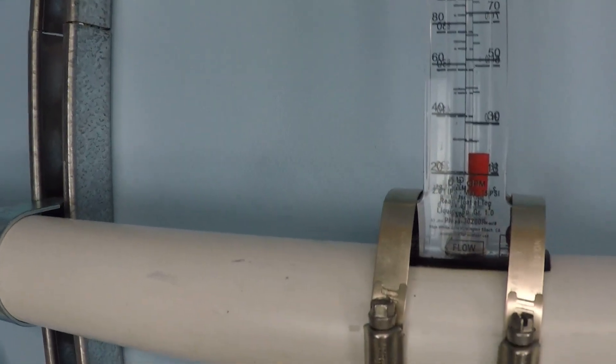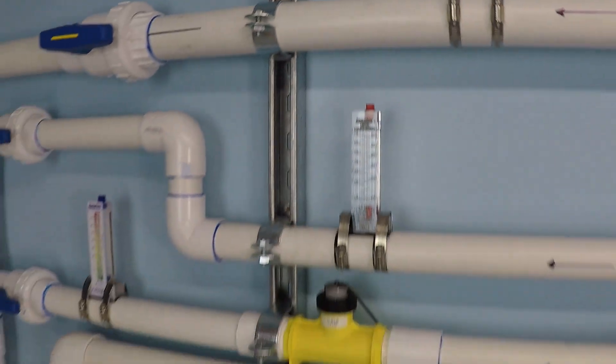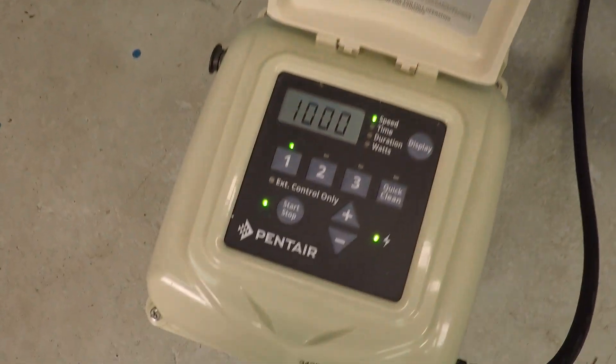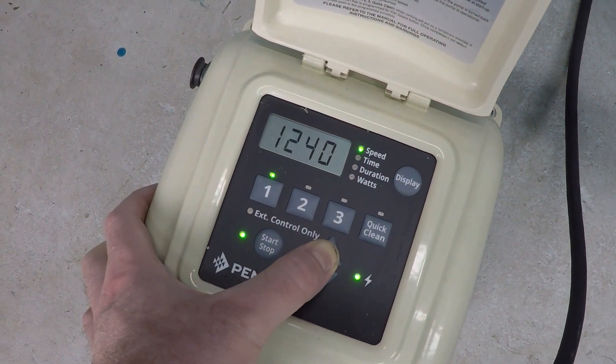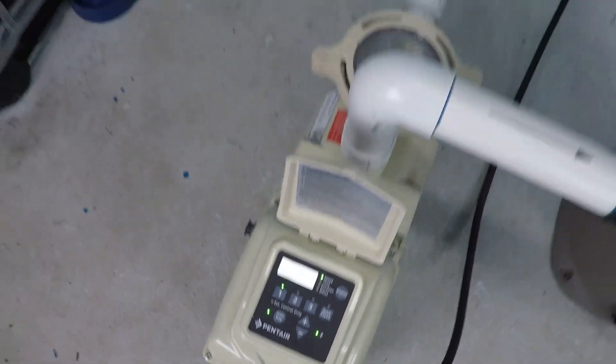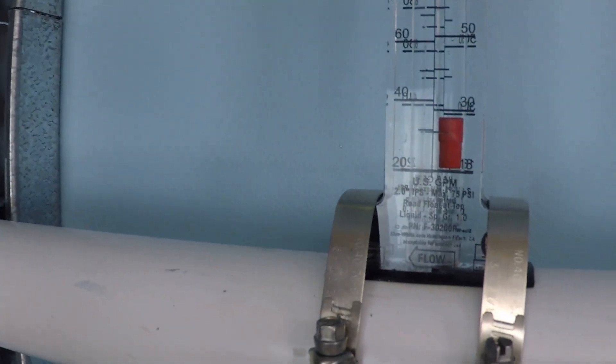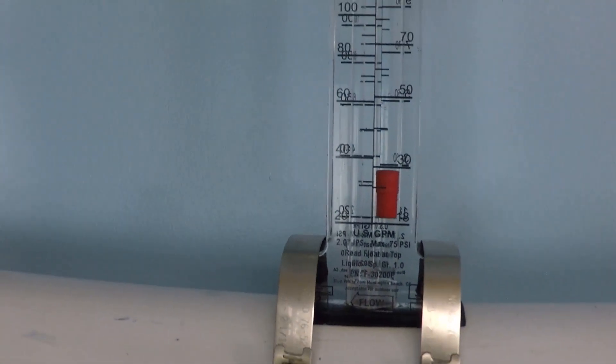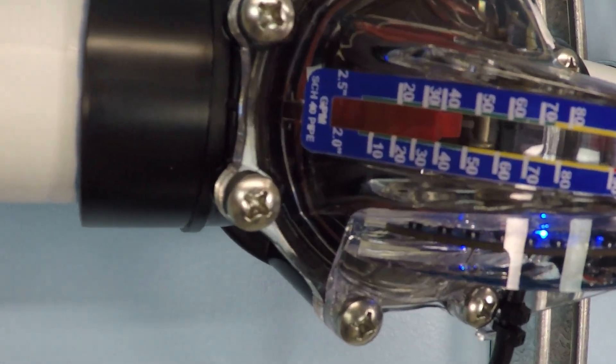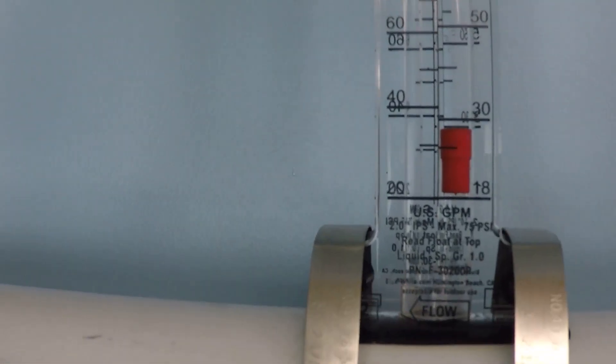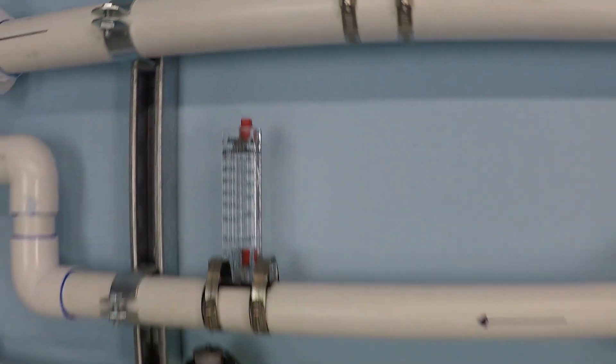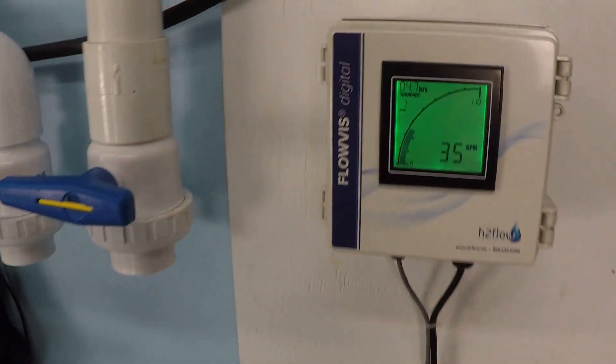And we're now up on to this variable area rotameter, which is interesting - you often don't get to see both of those types of meters installed together. Let's go look at the digital display over here, definitely easier to read a digital one if you have one. 35 gallons per minute.